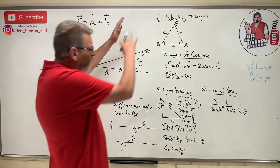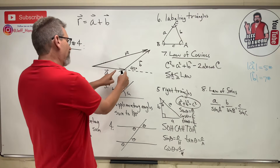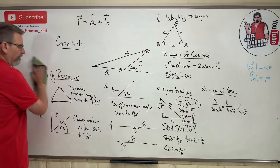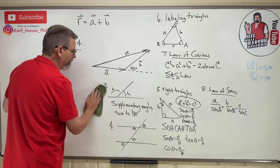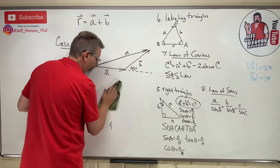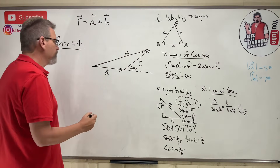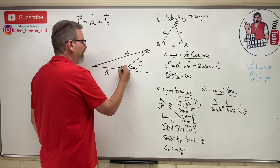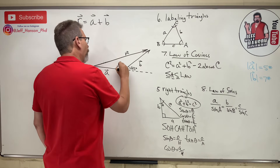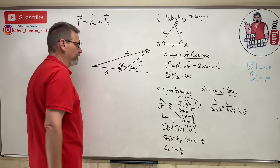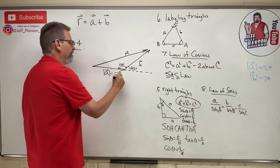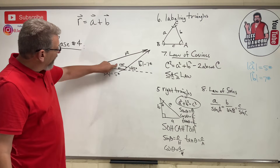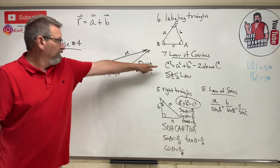Now let's use all this trig to solve that original triangle. We have a line, and the 42-degree angle between the vectors means the interior angle of the triangle is 180 minus 42 = 138 degrees, using supplementary angles. Side A is 5 and side B is 7. We know side, angle, side — so we use the law of cosines.